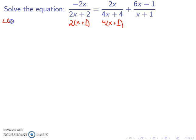The next step would be to find the least common denominator. We can see that they all have an x plus 1 on the denominator. In addition, we have a 2 and a 4, and the least common denominator between 2 and 4 is 4. So I'm going to multiply everything by 4x plus 1.